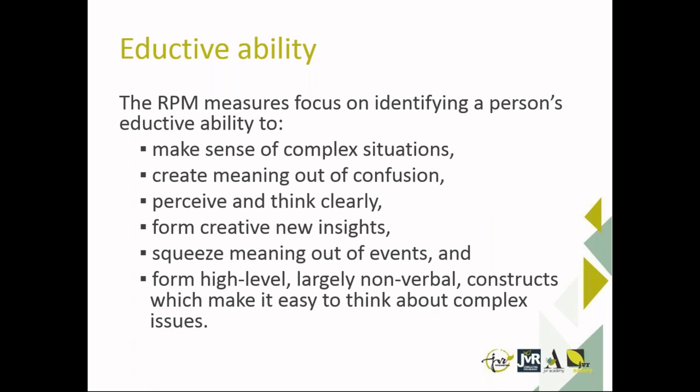In measuring inductive ability, the Ravens Progressive Matrices presents patterns of figures that must be completed, and these become progressively more difficult. These diagrammatic puzzles exhibit a serial change in two directions simultaneously. Each puzzle has a piece missing, which the candidate must find amongst the alternatives presented in each item.